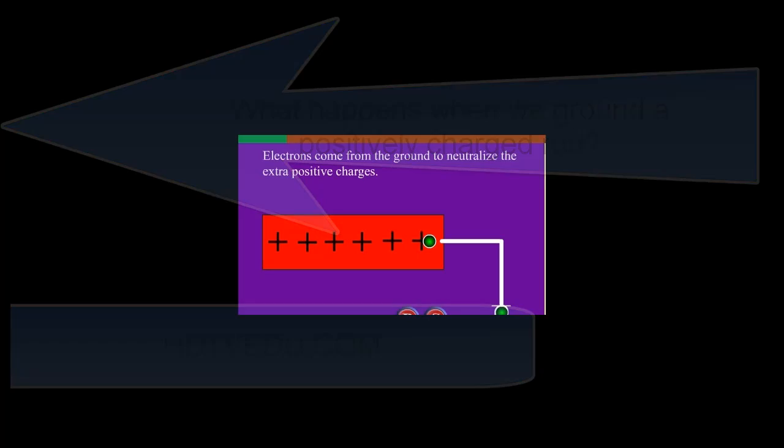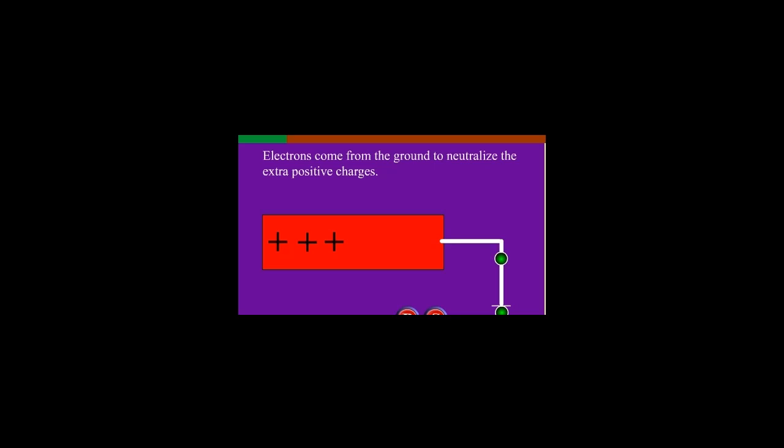Electrons come from the ground to neutralize the extra positive charges. The protons don't move—they don't go to the ground.